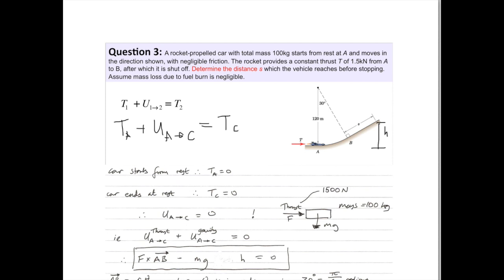Now, interestingly, kinetic energy at A is zero because it starts from rest. C is zero, it starts from rest. So you're left with the total work done is equal to zero. And actually, it's an exchange. Work starts off.